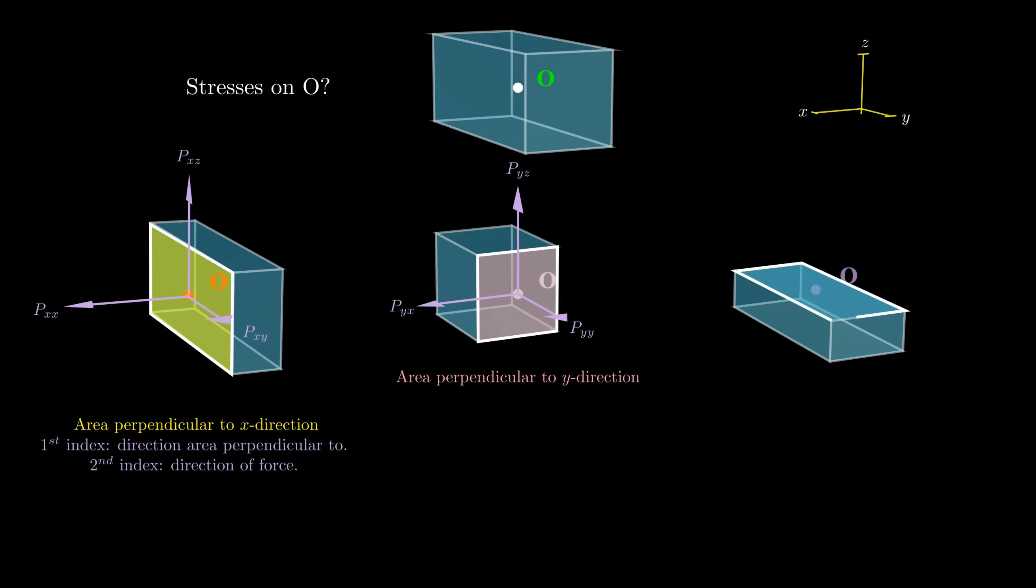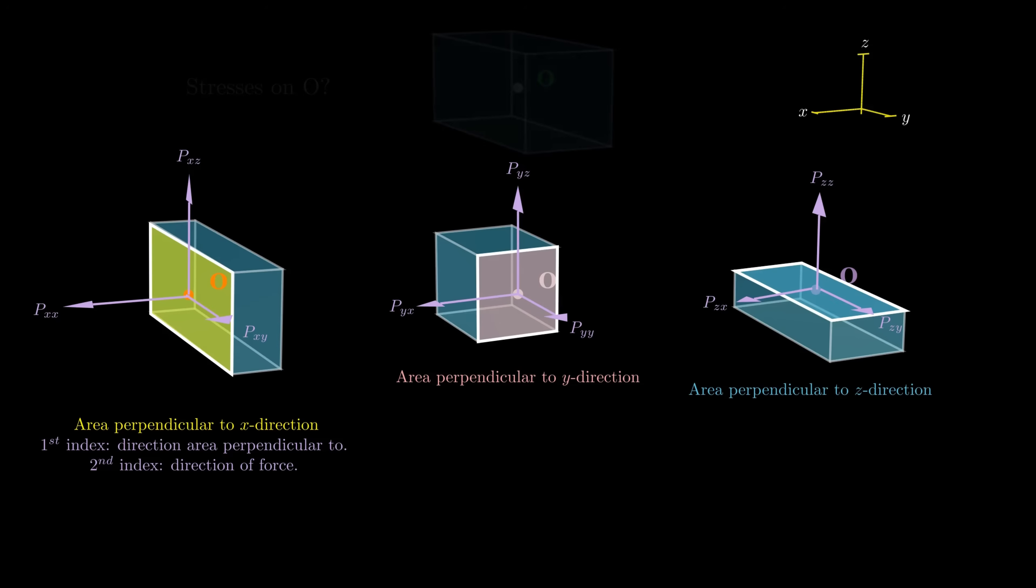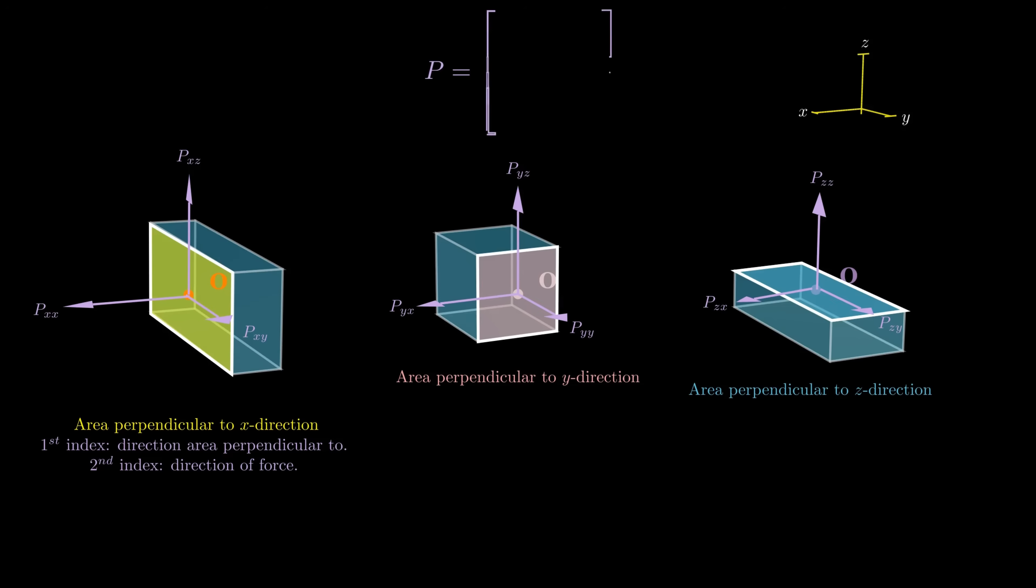The third cross-section, which is perpendicular to the z-direction, is similar. Point O experiences a force per unit area that can be broken down into the components p sub zx, p sub zy, and p sub zz. Again, now z is the first subscript on the p because the area I'm looking at is perpendicular to the z-direction.